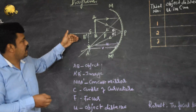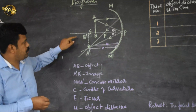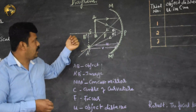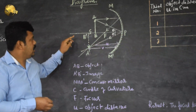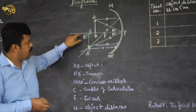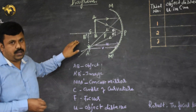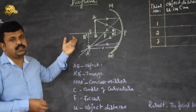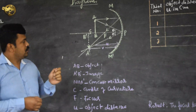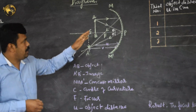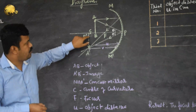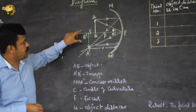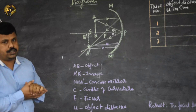An inverted image means any image formed below the principal axis — this imaginary line that joins the pole is called the principal axis. The image below it is called inverted; anything above the principal axis is erect. When we place the object between the centre of curvature and focus, the image is formed beyond the centre of curvature and will be enlarged.